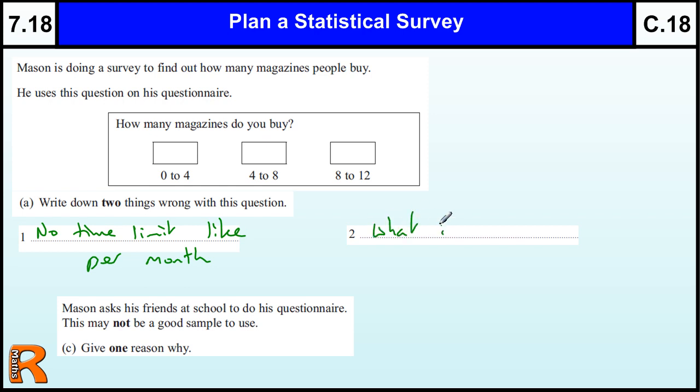Second thing: what if someone buys more than 12? There's no response box for more than 12. Or, four is in two boxes, so the response for four could be in either box.